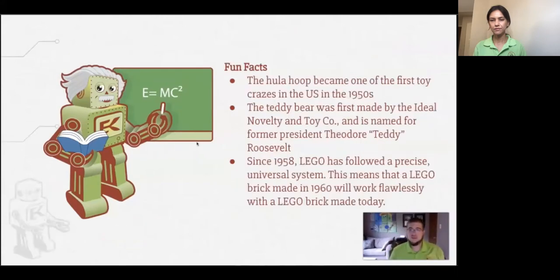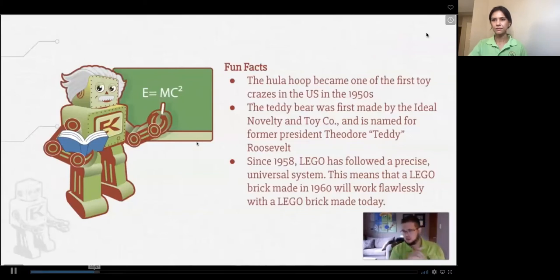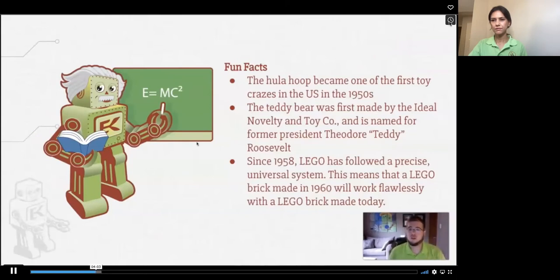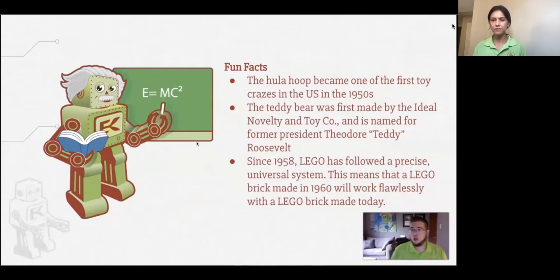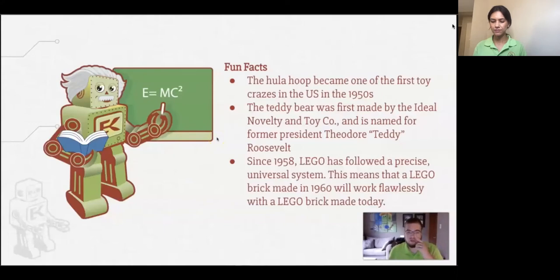Some fun facts: the hula hoop, a round hoop that you spin around your waist by moving your hips, became one of the first toy crazes in the U.S. in the 1950s. Another fun fact: the teddy bear was first made by the Ideal Novelty and Toy Company and is named for former President Theodore 'Teddy' Roosevelt — that's where the term 'teddy bear' came from.